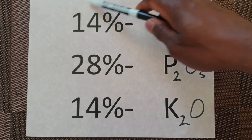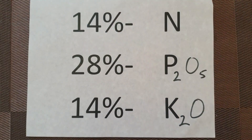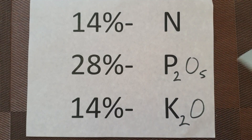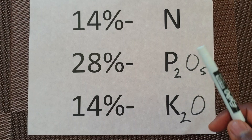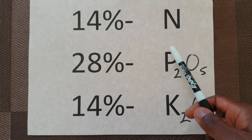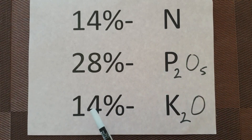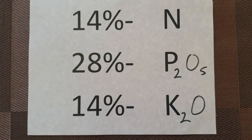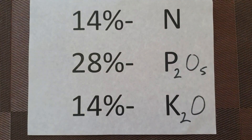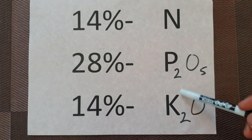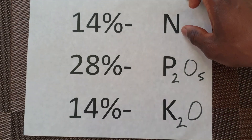Normally the percentage of nitrogen that you see represents the true amount of nitrogen that is in the bag. However, what it is essentially saying is 28% P2O5 and not 28% phosphorus only. This is saying 14% K2O and not 14% potassium only. So what we are here to do today is find out the exact percentage of phosphorus only and the exact percentage of potassium only.